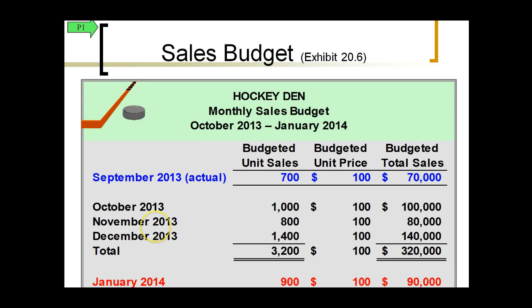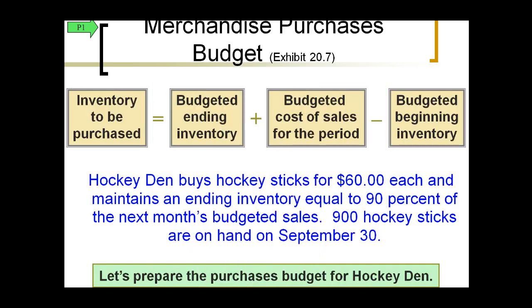A sales budget is based on a quarterly period from October to January. It shows what we think in terms of sales by unit, what the price is, and what total dollar sales are going to be. These three months show what we think we're going to receive in sales for those periods. We want to anticipate, based on knowledge at the time the budget is prepared, whether we'll earn or expend a certain amount during a certain period.